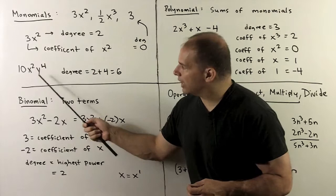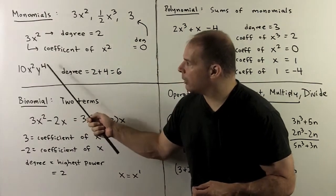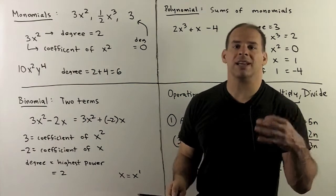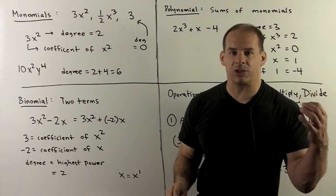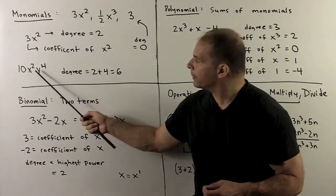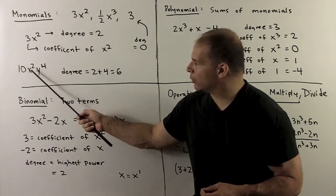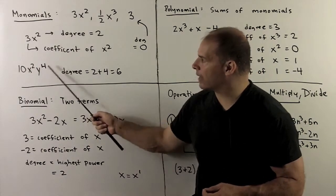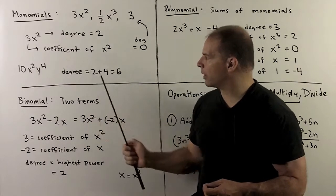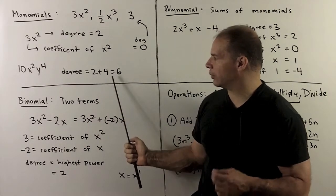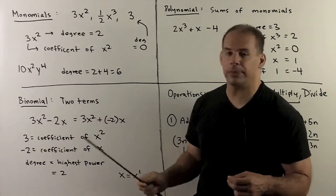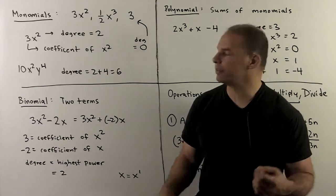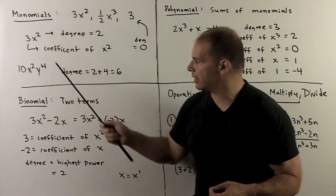As a special case, if we have more than one variable, for the degree I'll take the sum of the exponents. So here, with x squared y to the 4th, I'll take 2 plus 4, so the degree is going to be equal to 6. And the coefficient of x squared y to the 4th is equal to 10.